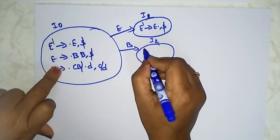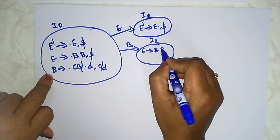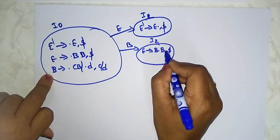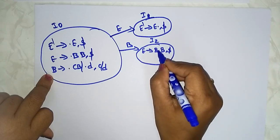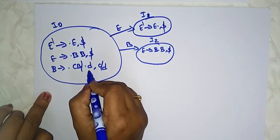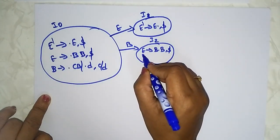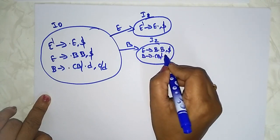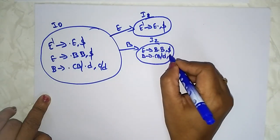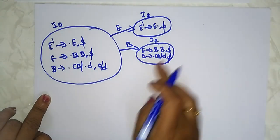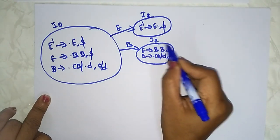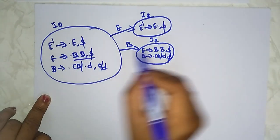I2: E → B · B, with comma/dollar lookahead. After the dot there is again B, so you need to write all productions for this non-terminal. The productions for B are: B → · CB and B → · D. Only write the productions for this non-terminal and copy the dollar lookahead.